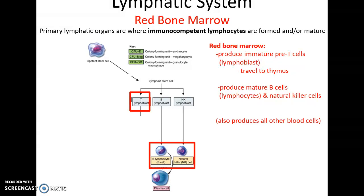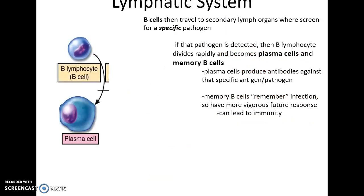Red bone marrow is where all blood cells are produced, including lymphocytes. Coming out of the red bone marrow are mature B cells, which enter the bloodstream and go where they need to be, as well as mature natural killer cells, which go out and kill abnormal cells of the body, and immature pre-T cells, which go to the thymus to mature. B cells travel to secondary lymph organs such as lymph nodes and lymph nodules, screening for specific pathogens. Each B cell is keyed to a specific pathogen.